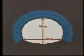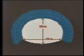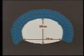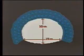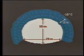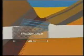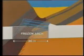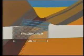Geofrost calculates the freezing time with the help of advanced computer programmes. Thermocouples are used to check that the design values are reached. The arch was designed to be at least 2 metres thick and have a temperature of at least minus 15 degrees Celsius. This stabilising and watertight frozen arch was established from one side before the drilling and blasting continued from the other side.